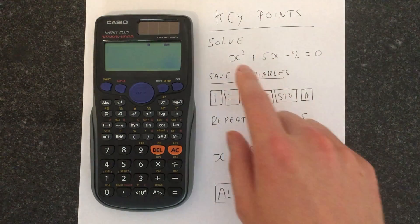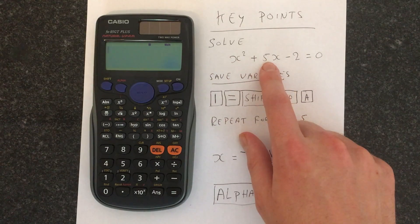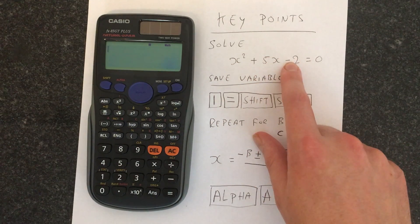So we need to get our a, b, and c. So a is going to be 1, b we're going to take as 5, and c is going to be minus 2.